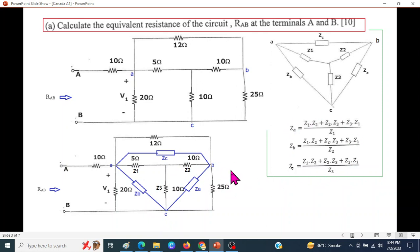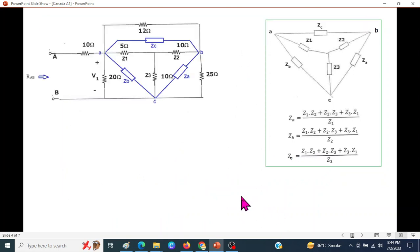Now we will use this formula to calculate the values. The first one, ZA, you can see it is Z1 Z2 plus Z2 Z3 plus Z3 Z1. Putting this value, Z1 multiply by Z2 plus Z2 Z3, so this is Z2 10 and this is Z3 10, so 10 by 10. The third one is Z3 Z1, this is Z3 10 and Z1 is 5. Divided by, for ZA we will just take the opposite arm, that is Z1. Opposite of ZA is this, so we will divide that by Z1. The answer we get is 40 ohm.